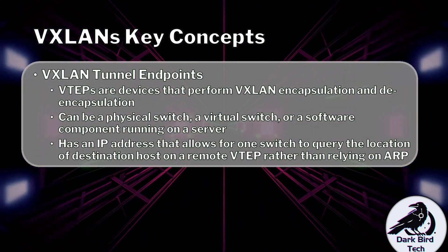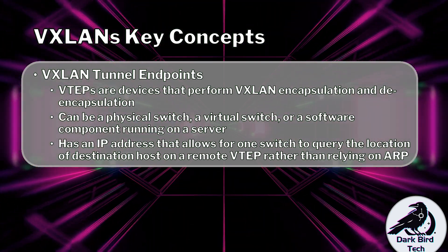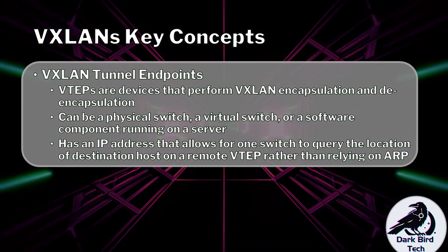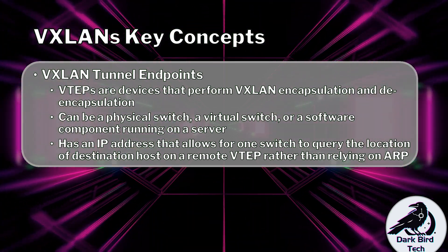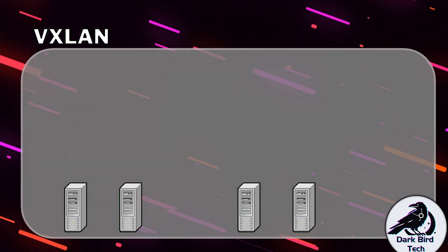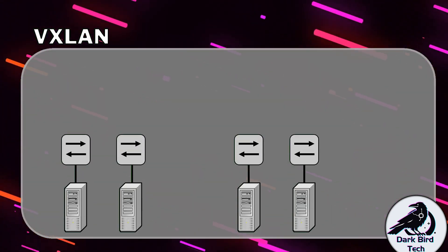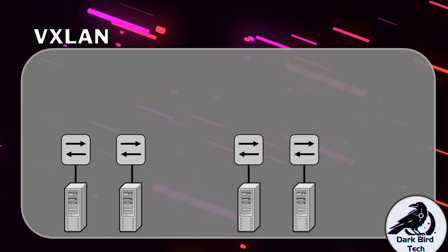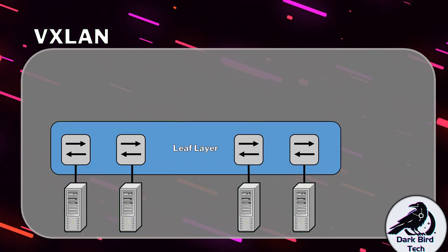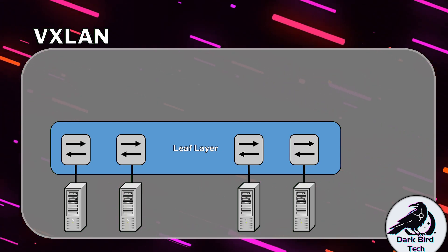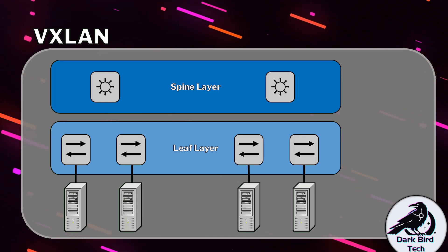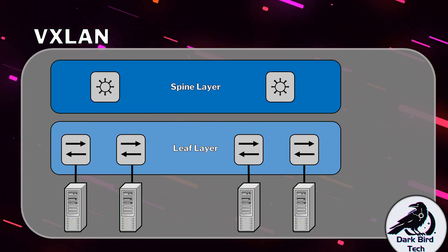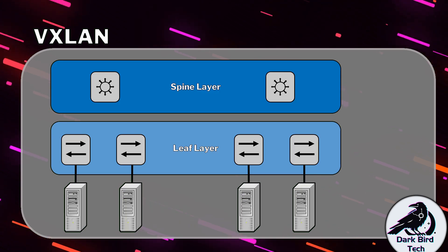The VTEP will have an IP address assigned to it so that it can work both layer two and layer three operations. And it is able to use that IP address to query neighboring VTEP interfaces on a remote device to find out whether a particular endpoint is there or not, rather than relying on something like ARP. In data center design, we usually refer to the layer of switches that connect the servers to the network infrastructure as the leaf layer. And then to interconnect the leaf layer together, we will probably create something called a spine layer. Odds are all of these switches would probably end up being layer three, and I'm definitely running layer three at the spine layer.